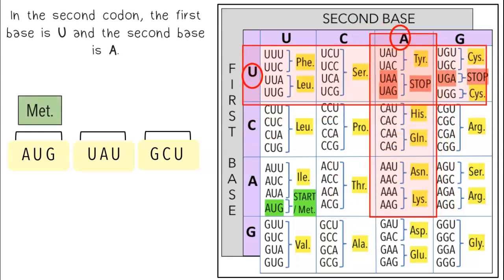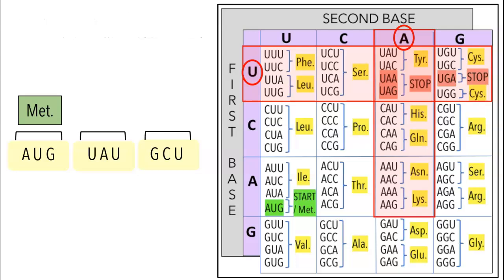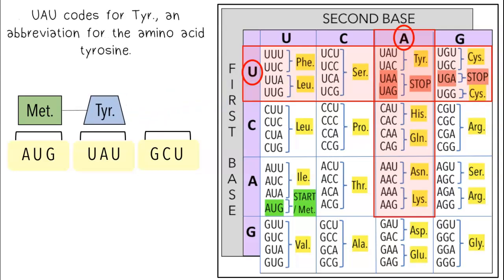In the second codon, the first base is U and the second base is A. UAU codes for TYR, an abbreviation for the amino acid tyrosine.